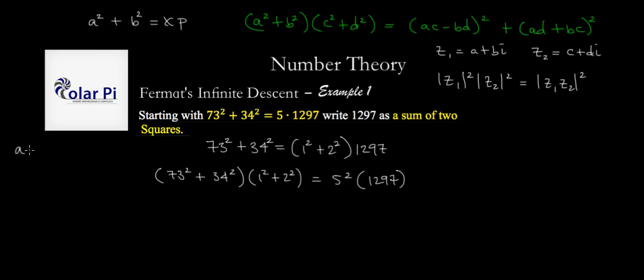So it's clear that a is equal to 73, b is equal to 34, c is equal to 1, and then d is equal to 2.